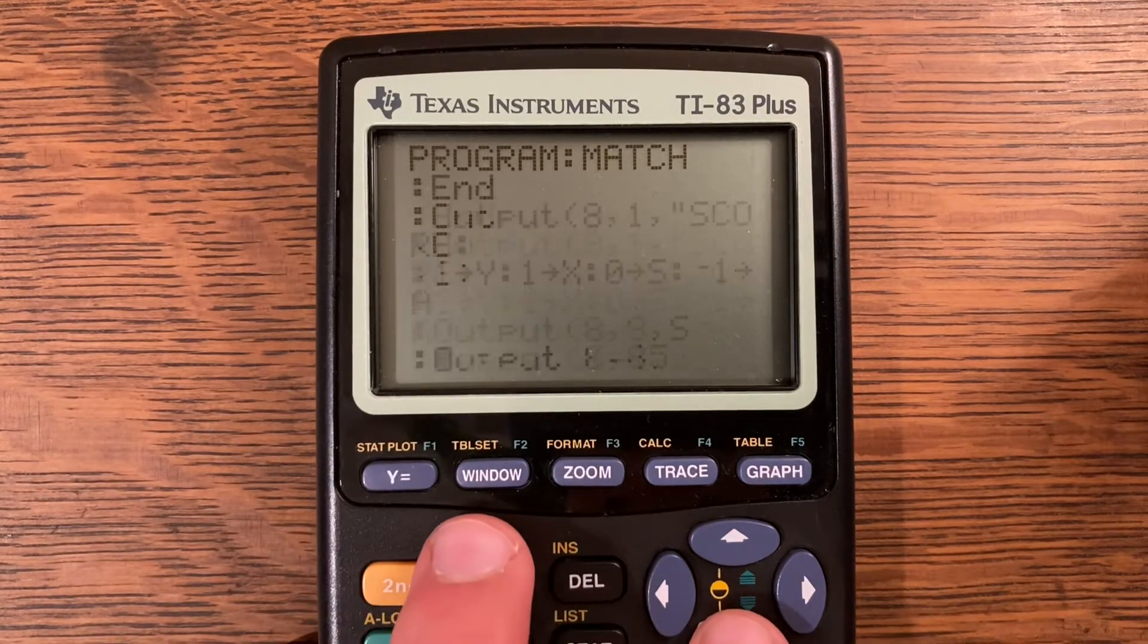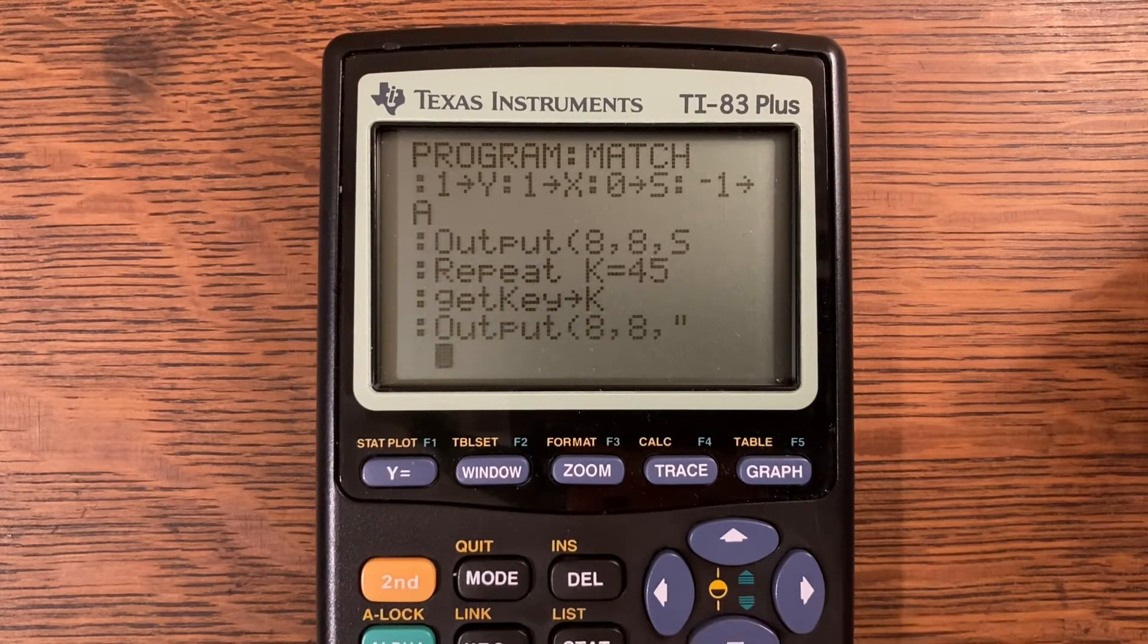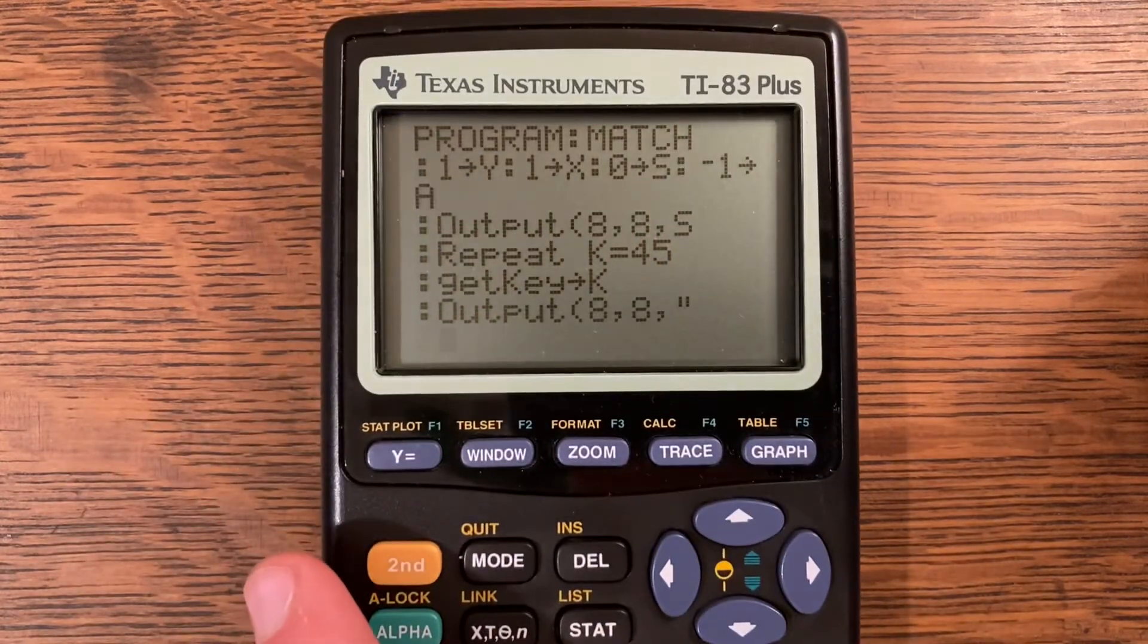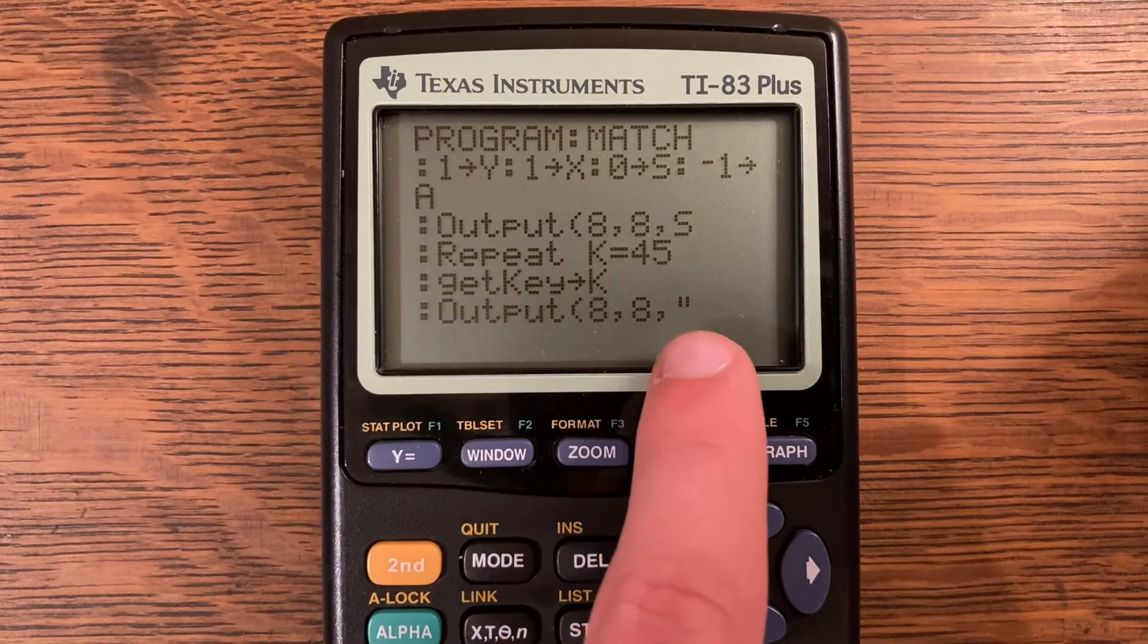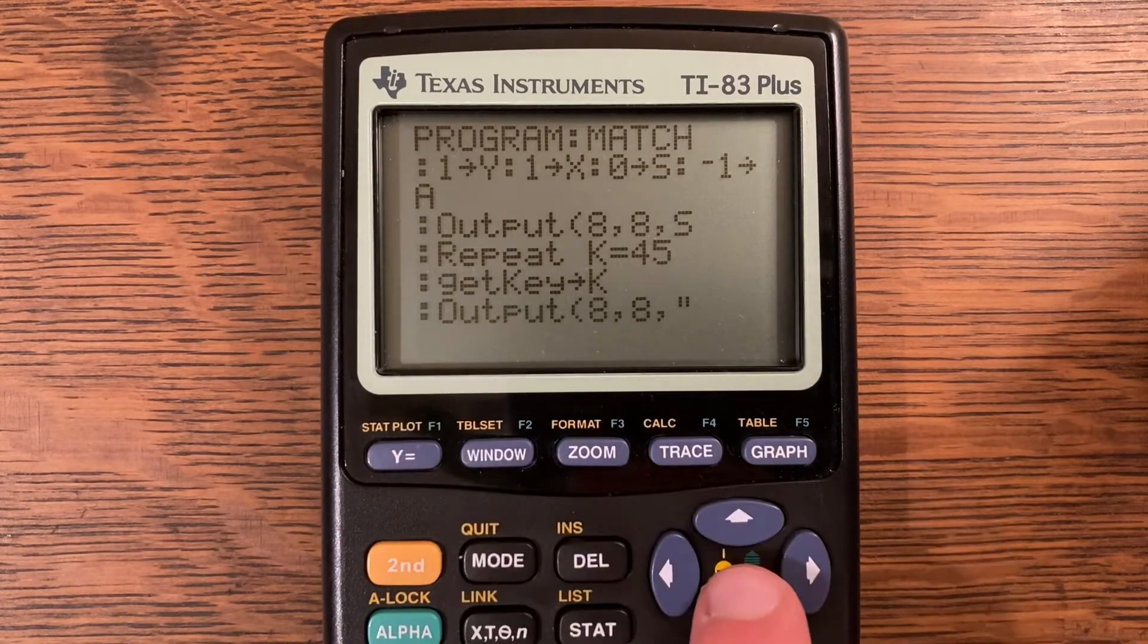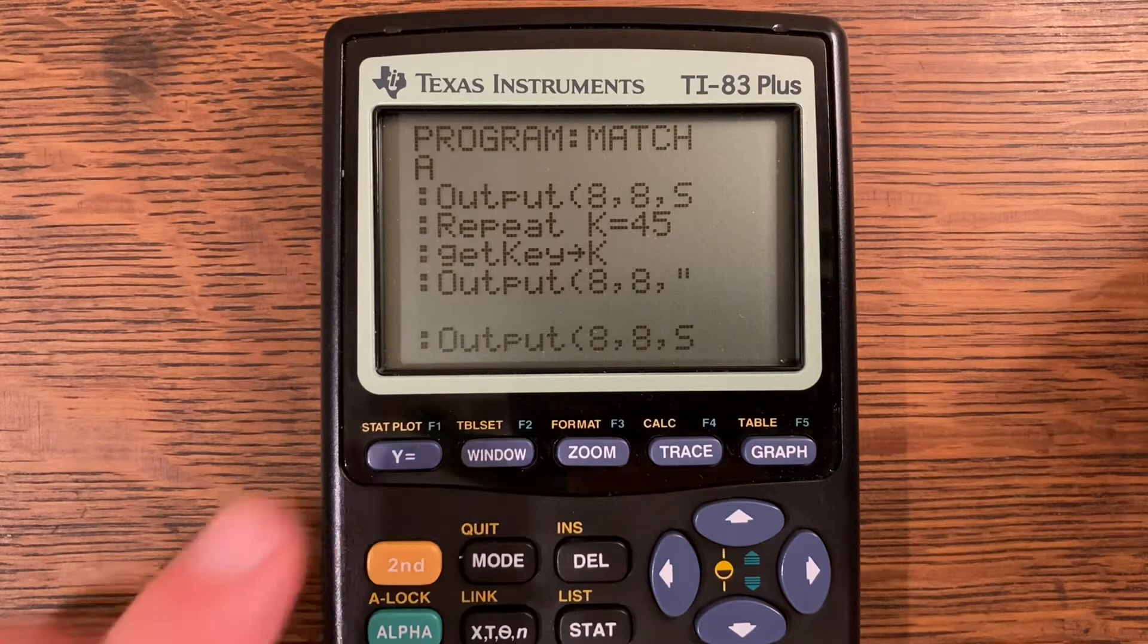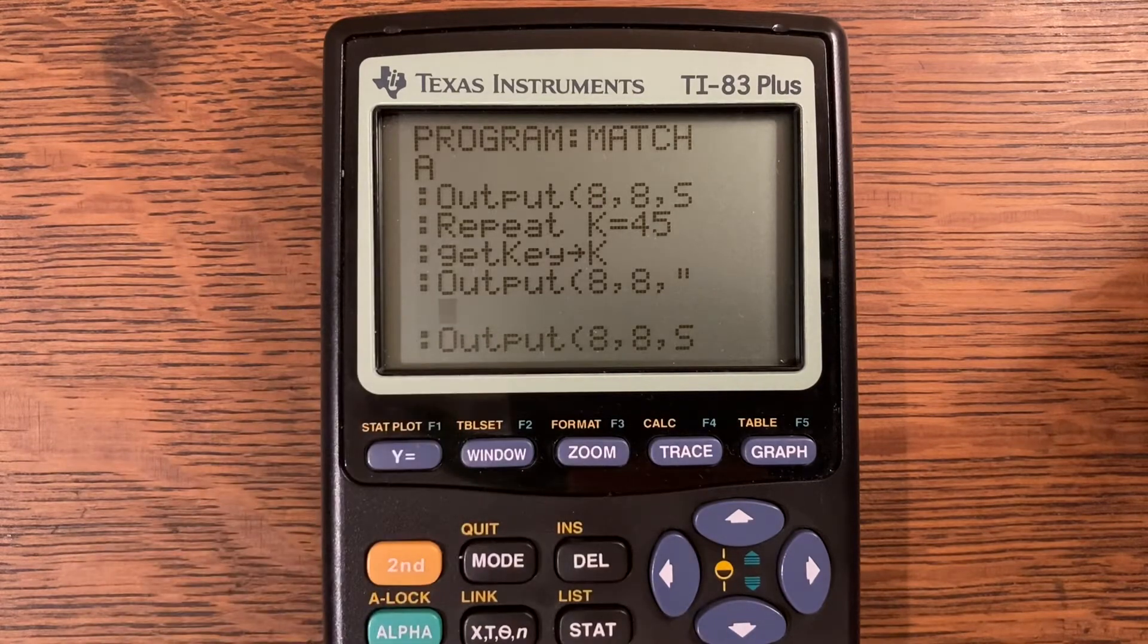Output at A comma 8 comma S. Repeat until K is equal to 45 or K is equal to A. Clear key, that's what 45 is. Get key store into K. Output at A comma 8 comma quote, I have five spaces here but you could probably manage with just two.